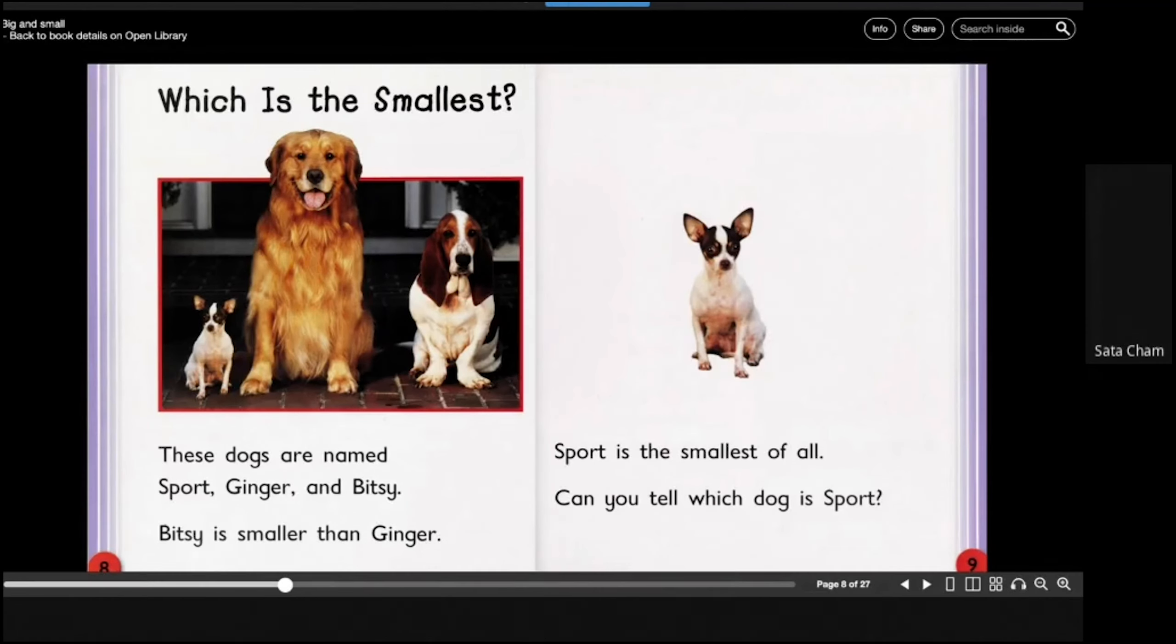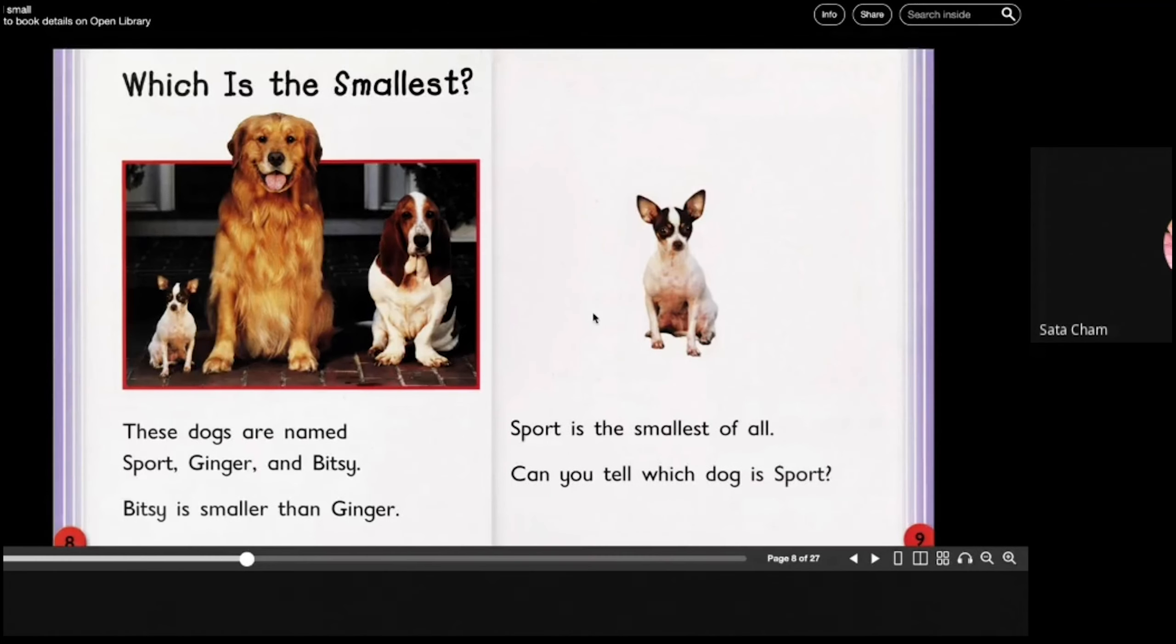Which is the smallest? These dogs are named Sport, Ginger, and Bitsy. Bitsy is smaller than Ginger. Sport is the smallest of all. Can you tell which dog is Sport? So which one is the smallest?